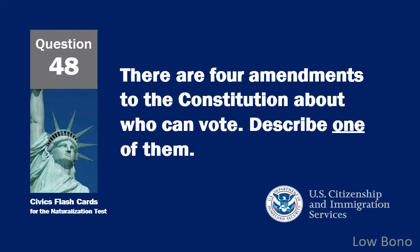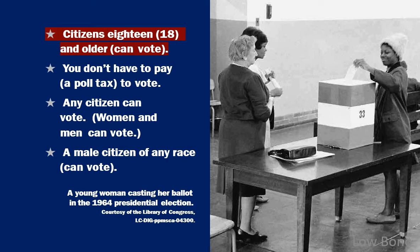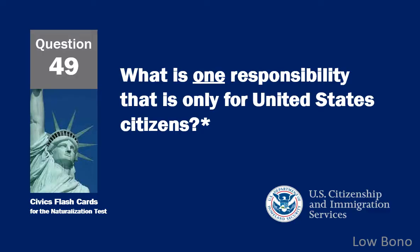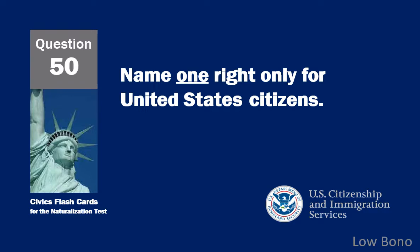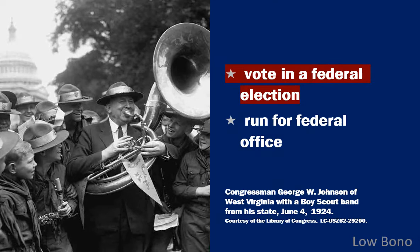There are four amendments to the Constitution about who can vote. Describe one of them. Citizens 18 and older can vote. What is one responsibility that is only for United States citizens? Vote in a federal election. Name one right only for United States citizens. Vote in a federal election.